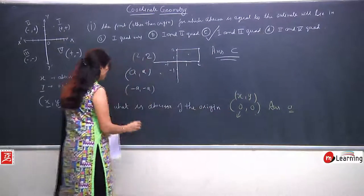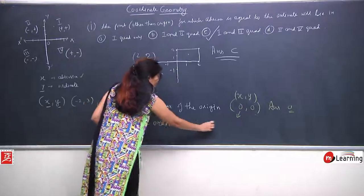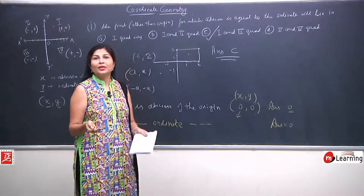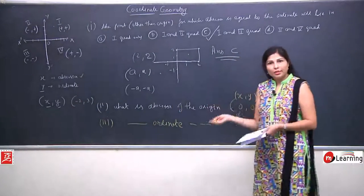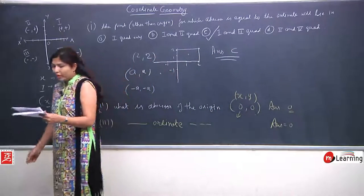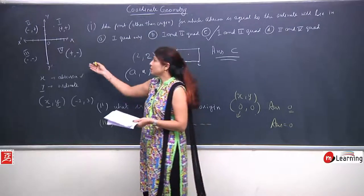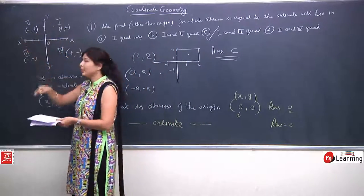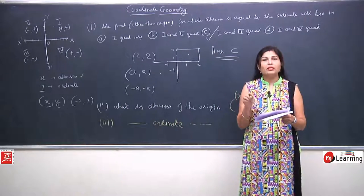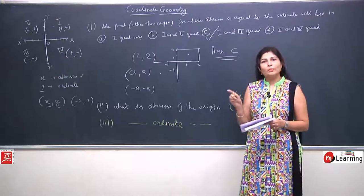Agar isi question mein woh poochhen 'what is the ordinate of the origin?' — same question mein unhone word change kar diya — tab bhi hamara answer hoga 0. Why? Because origin ke coordinates hi 0,0 hote hain, toh chahe woh abscissa ho ya ordinate ho, unka answer bhi 0 aayega. Similarly, 'where do the two axes meet?' — yeh x axis hai, yeh y axis hai, yeh kahan meet kar raha hai — 0,0 means origin. So the answer is: at origin, with coordinates 0,0.